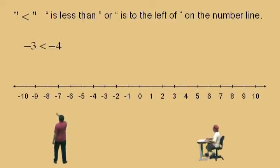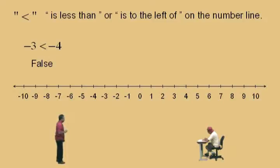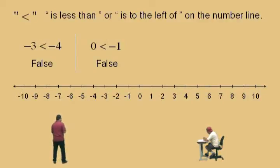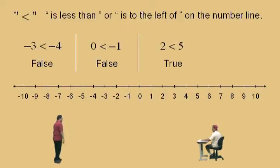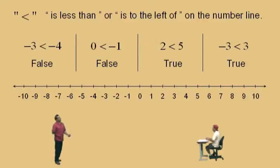Here we go, Charlie. Is negative 3 less than negative 4? Is that true or false? False. That's right, it's false. Negative 3 is not less than negative 4. In the previous problems, we found out that negative 3 was actually greater than negative 4, because negative 3 is to the right of negative 4. So this is a false statement. Here we go, Charlie — 0 less than negative 1. Is 0 less than negative 1? No, it's not. 0 is not to the left of negative 1, so that is a false statement. Is 2 less than 5? Yes, it is — 2 is to the left of 5. Is negative 3 less than 3? Yes, that is true. 3 is the bigger number. You look at a number line, no problem.